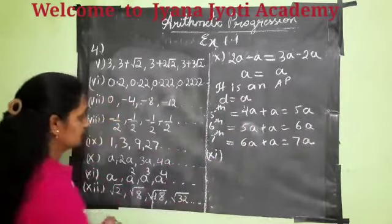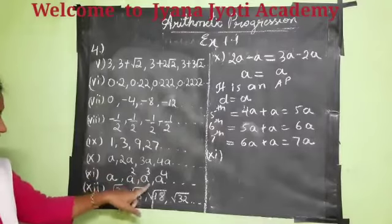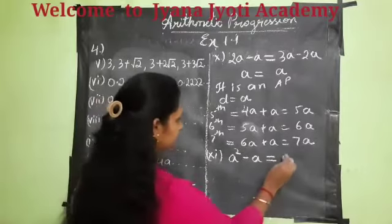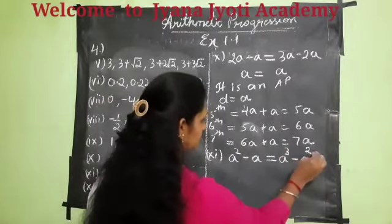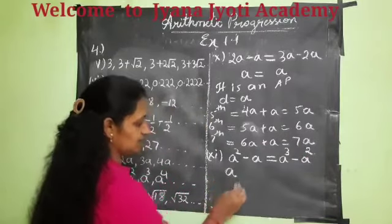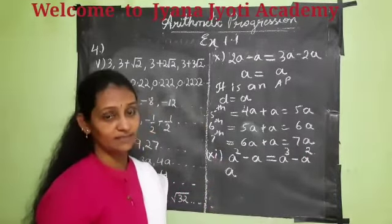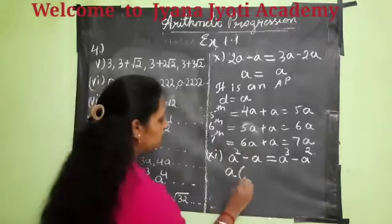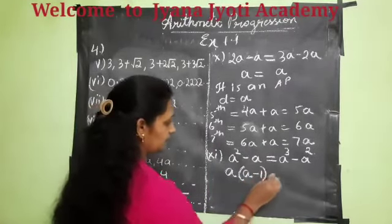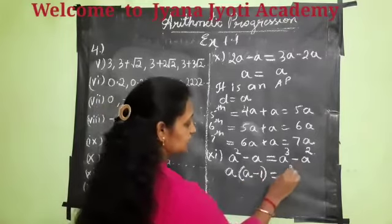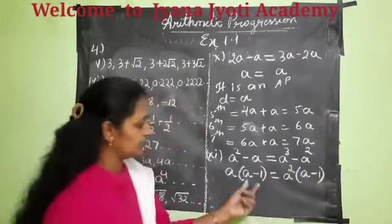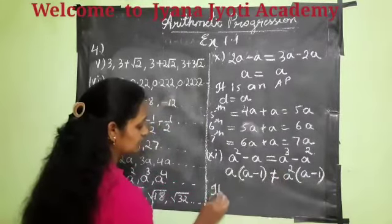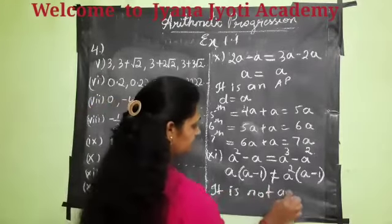Let us go for the eleventh problem: A, A squared, A cubed, A to the 4th. Here A squared minus A should be equal to A cubed minus A squared. The common factor of A squared minus A is A(A minus 1), and for A cubed minus A squared it is A squared(A minus 1). Here A minus 1 is the same on both sides, but A and A squared are not equal. Hence we can say that it is not an AP.